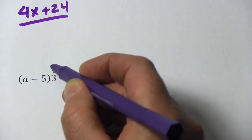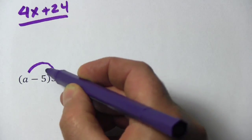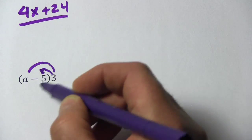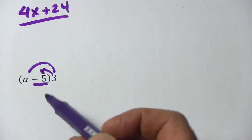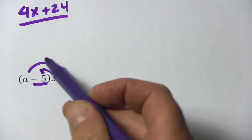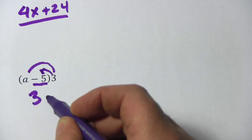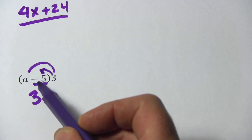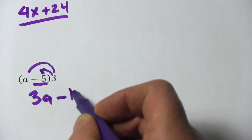You're still going to do the same thing. You're going to multiply the 3 by the a, and the 3 by the negative 5. Remember, this sign is important, so don't let that negative sign slip away from you. 3 times a is 3a. 3 times negative 5 is negative 15.